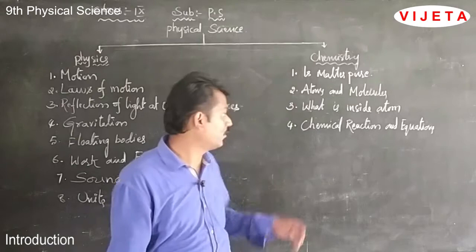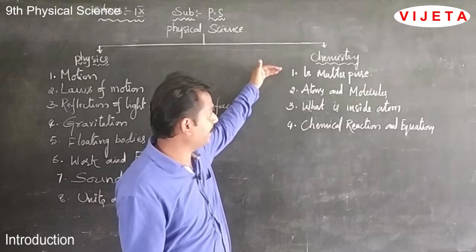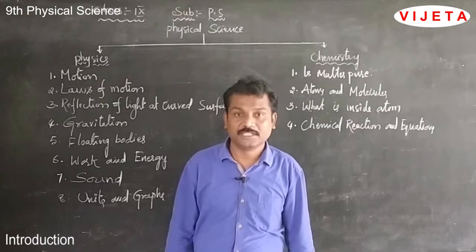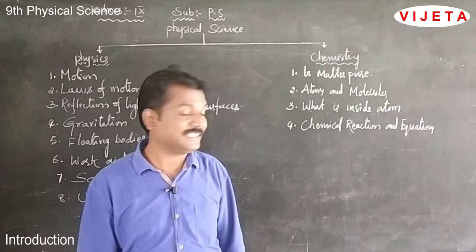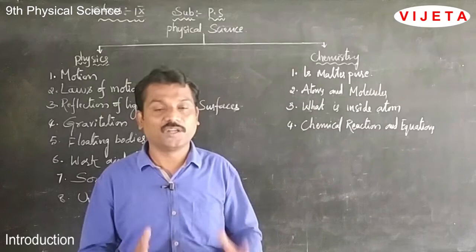There are 4 units in chemistry: the first is 'Is Matter Pure?', the second is atoms and molecules, the third is what is inside the atom, and the fourth is chemical reactions and equations. The total number of units in 9th standard physical science is 12 — 8 in physics and 4 in chemistry. This is the syllabus of 9th class physical science.